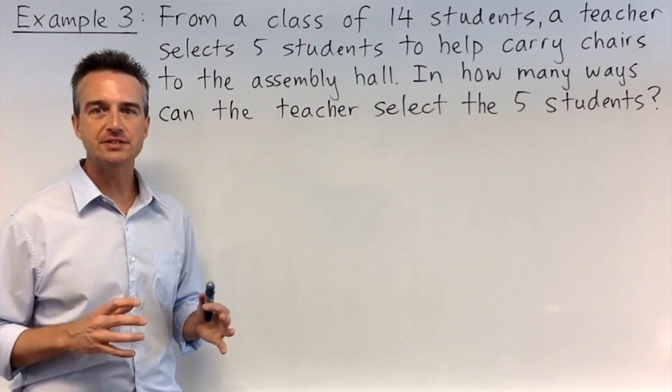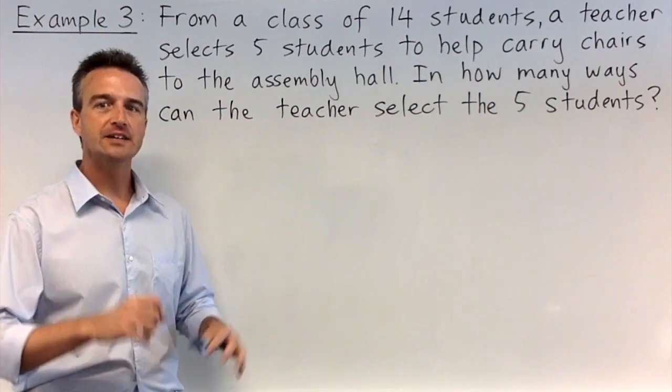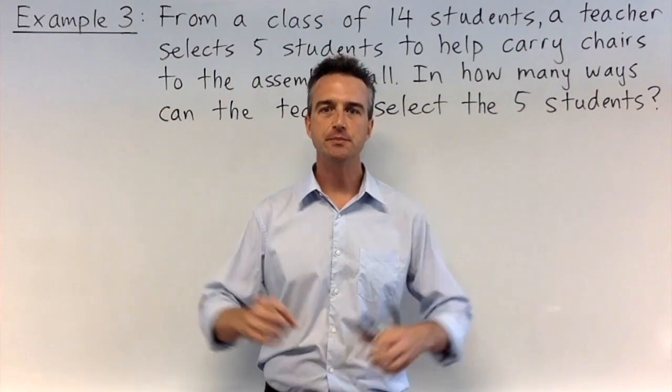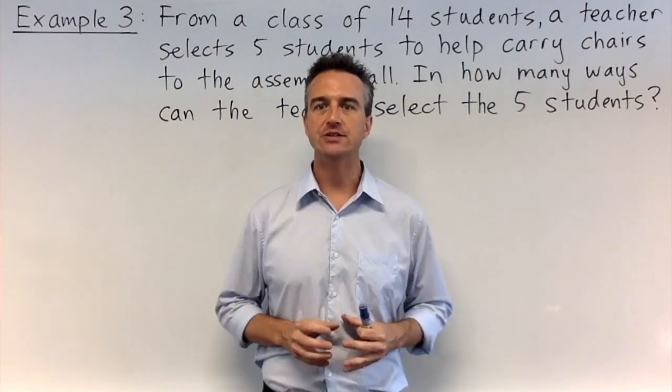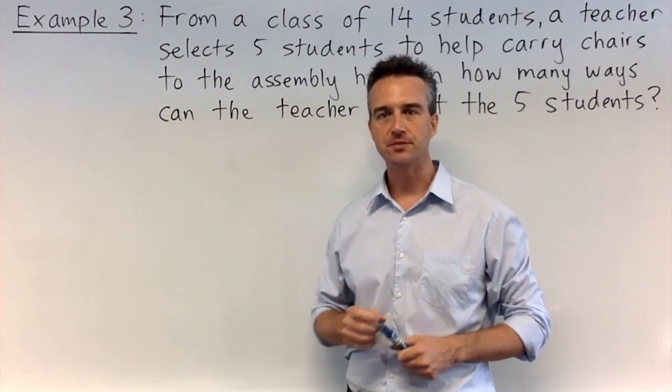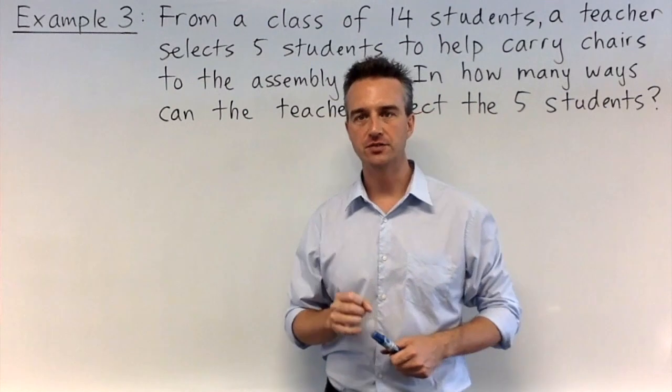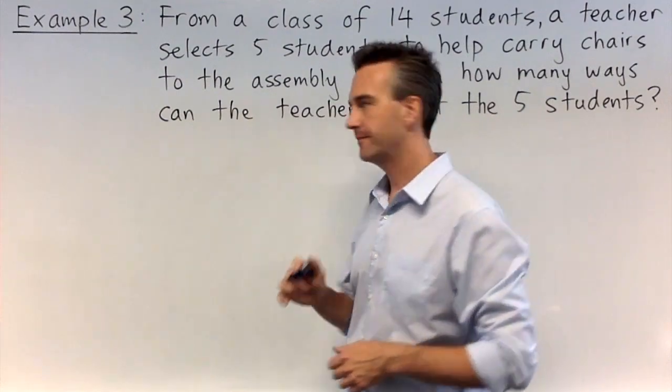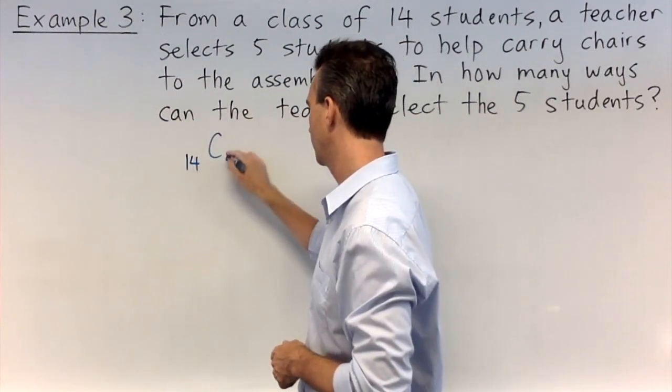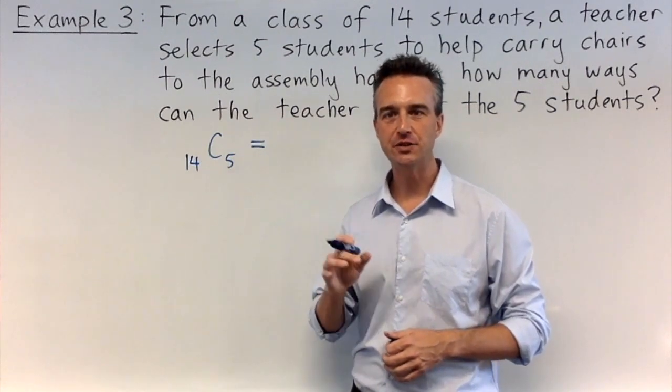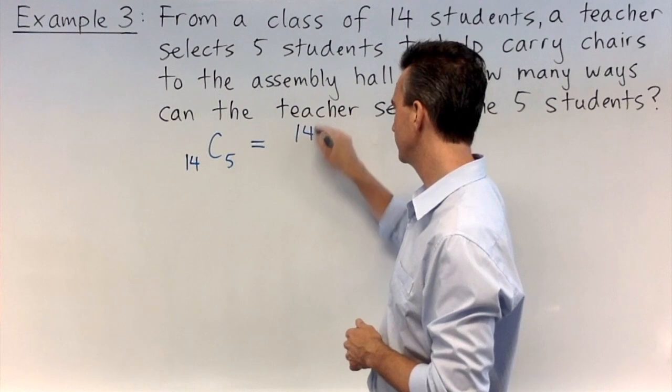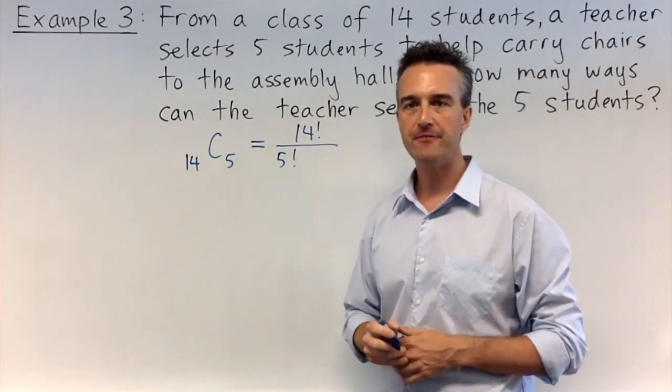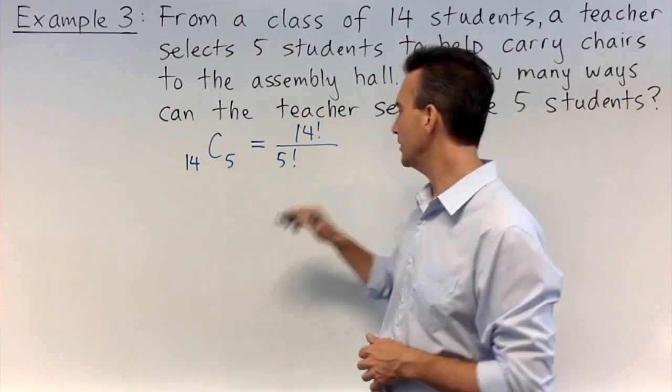Example 3. A teacher is going to select 5 students from a group of 14 to carry chairs to the assembly hall. In how many ways can the teacher do this? In this case, we are not ordering the students, we are simply choosing a group. So this is a combinations question. So there are 14 students to choose from. So our n value is 14. And we are choosing 5 of those students. So our r value is 5. So the answer is going to be 14C5. Using our nCr formula, the answer is going to be factorial n divided by factorial r and also divided by factorial n minus r. 14 minus 5 is 9.